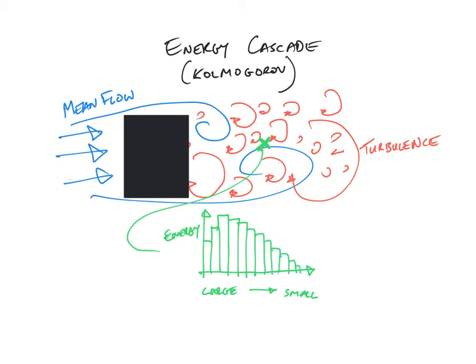And it looks something like this. And basically what this says is the largest eddies, these ones, have the most energy. And the smallest eddies, these ones, have very little energy in comparison. And this is what basically is referred to as the energy cascade.